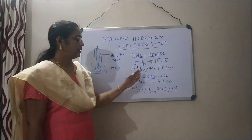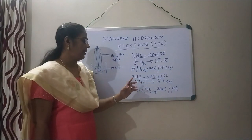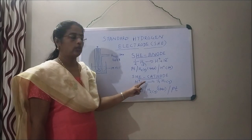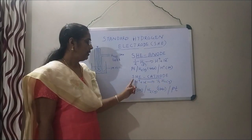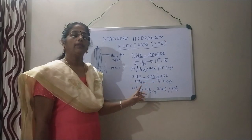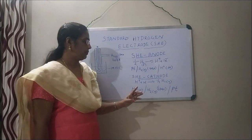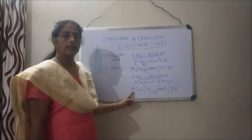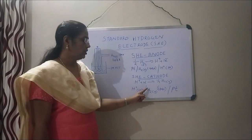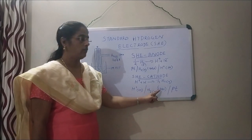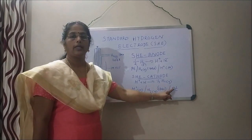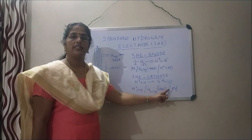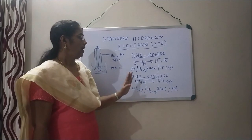If SHE is acting as cathode, the half cell reaction is: H⁺ + 1 electron → ½H₂(g). That is a reduction reaction. The cell representation is: H⁺(1 M) | H₂(g, 1 bar) | Pt. This is the representation of the standard hydrogen electrode when it is acting as cathode.